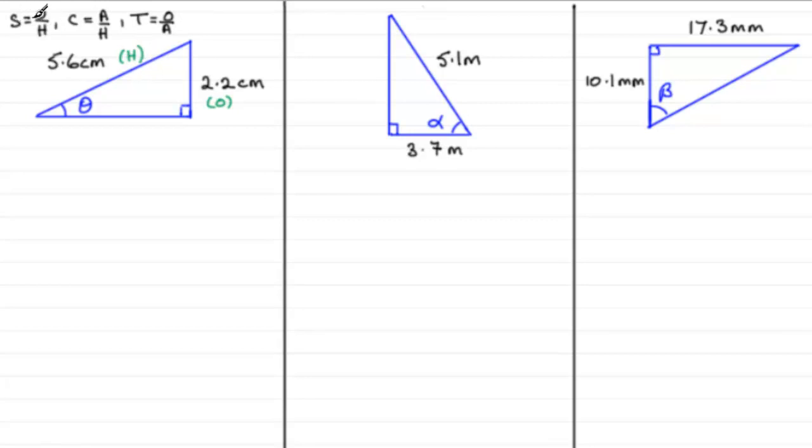So once we've got these sides here, we just need to work out which of these three trigonometric ratios connects, in this case, the opposite side and the hypotenuse. And it is the sine ratio. So what we need to write is that the sine of the angle theta in this case equals the opposite side divided by the hypotenuse. So it's 2.2 divided by the hypotenuse, which is 5.6. We don't need to write the units in centimetres because they're both in centimetres, so this has no dimension to it.